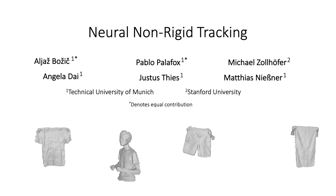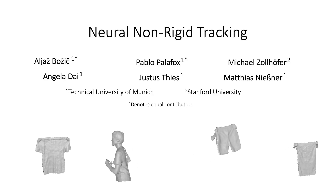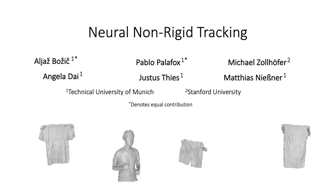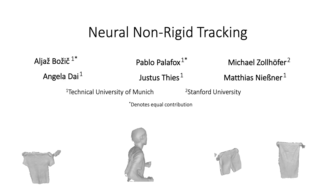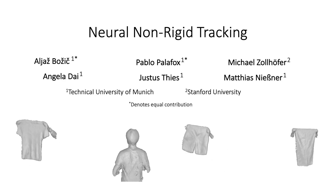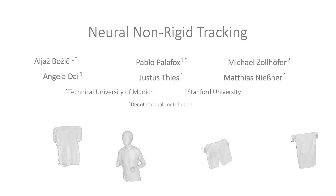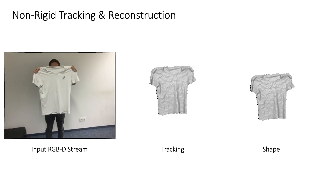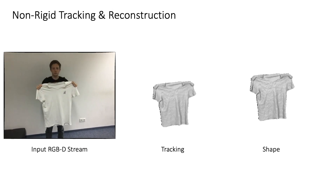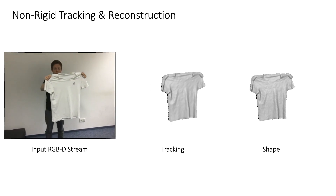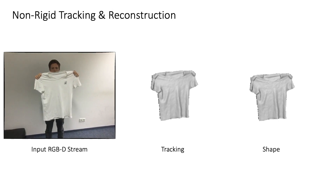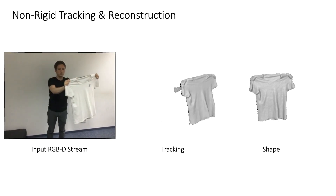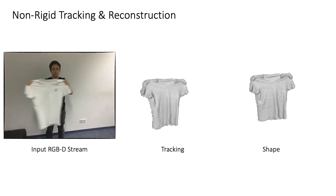We present neural non-rigid tracking, an end-to-end differentiable non-rigid tracking approach. Given an input stream of RGBD frames, we want to track a given foreground object that deforms non-rigidly, while simultaneously reconstructing its shape.